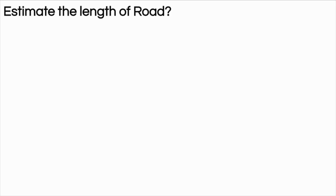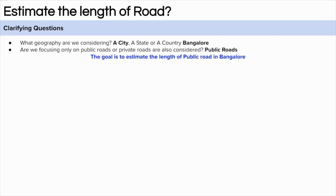I hope you have something in your mind. The first question we can ask is about the geography — are we calculating the length of road for a particular city, state, or country? Let's assume we are calculating this for a city, that is Bangalore. The second question is about what type of road we are thinking about, because there are different types of roads like public road or private road. By private road, I mean roads within big residential complexes and apartments in Bangalore, including pathways. Let's assume we are only thinking about public roads in Bangalore.